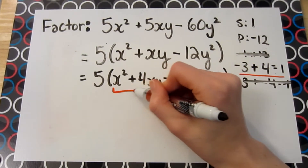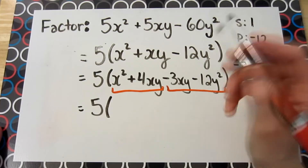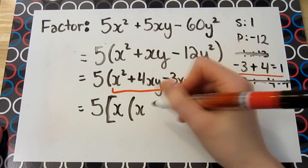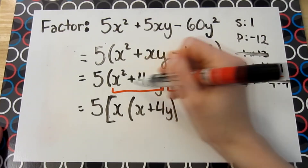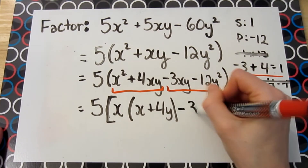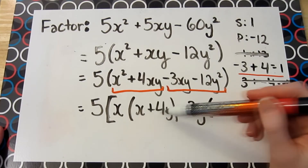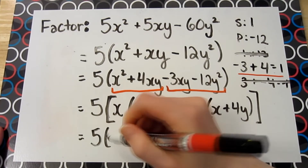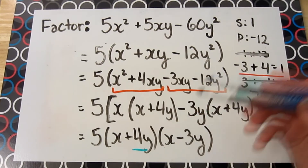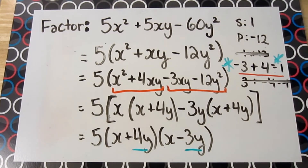Next, we're going to factor by grouping, looking at each set of terms separately. Remember to keep that common factor of 5 at the front. Looking at the first two terms, we can factor out an x, leaving us with x plus 4y, factored out of the first set. For the second set of terms, there's a negative 3y common between both, leaving us with x plus 4y again. You're left with two common factors, so we can finish factoring. I want to draw your attention to the fact that the two sets of parentheses at the end contain the two numbers we found — negative 3 and positive 4 — with the y variable appearing as the second term in both sets of parentheses.